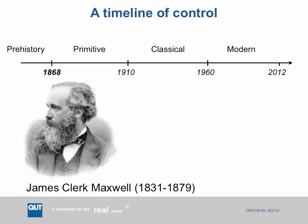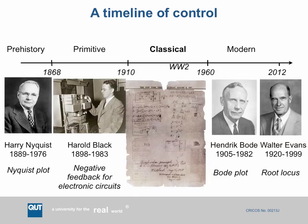In 1868, James Clerk Maxwell wrote down the mathematics that defined control theory — he was the first person to do this, really marking the end of the prehistory era. Before that it was all rather ad hoc with float regulators and centrifugal governors. Maxwell you probably know from electromagnetics — he wrote the famous Maxwell's equations. So Maxwell was the end of prehistory and the beginning of the primitive era, though I have to confess I don't know much about the primitive era.